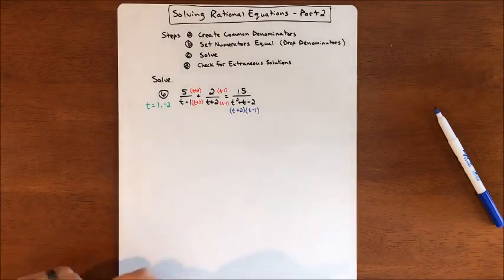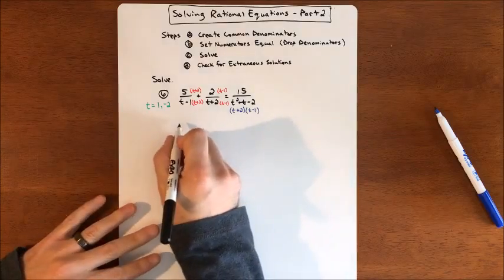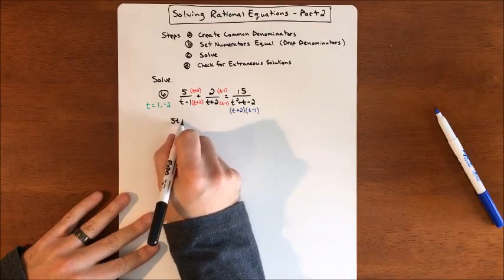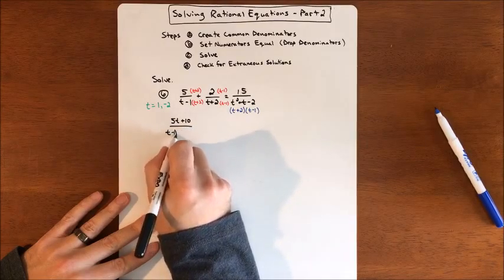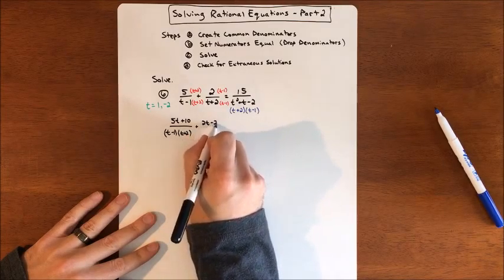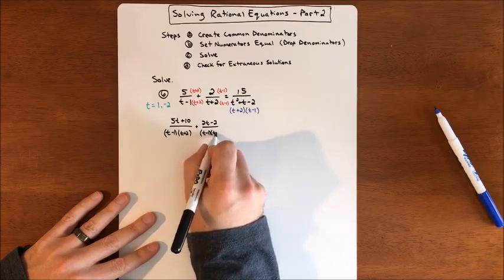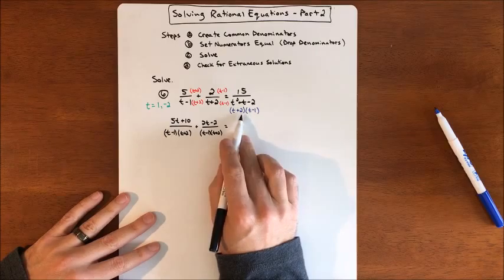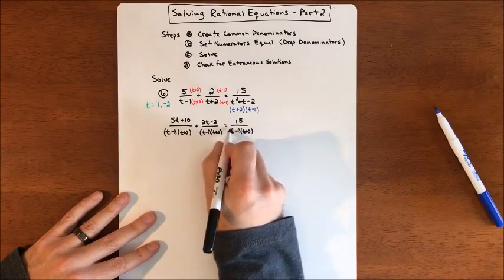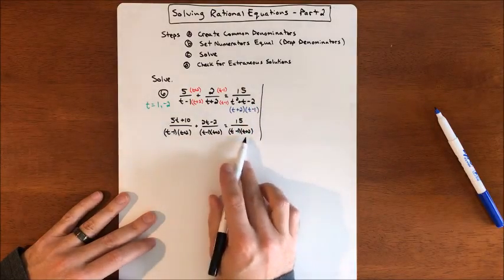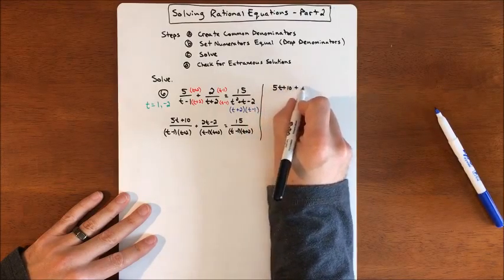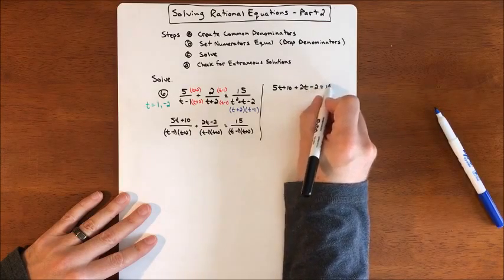We'll distribute through, and we're going to have our common denominators, then we can just focus on the numerators. If we distribute, we're going to get 5t plus 10 over (t minus one)(t plus two), plus 2t minus two over the same (t minus one)(t plus two), equals 15 over (t minus one)(t plus two). We're ready to just drop our denominators — they all match, so now we've got to get the numerators: 5t plus 10 plus 2t minus two equals 15.